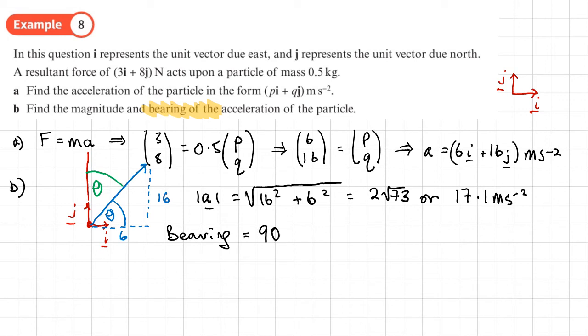So I'll just write that down: bearing equals 90 degrees minus—now this angle here will be the tan inverse of the opposite over the adjacent, so it'll be the tan inverse of 16 over 6.